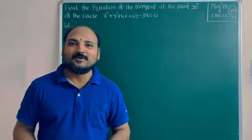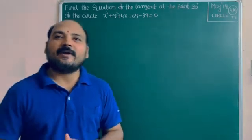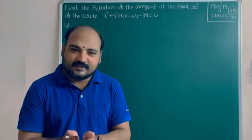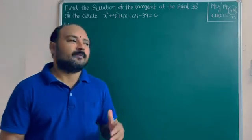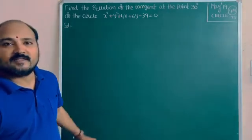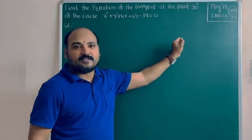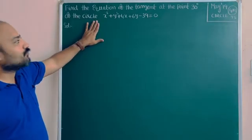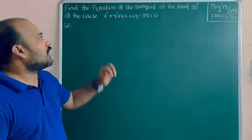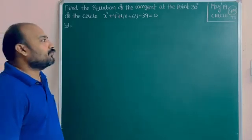Hi dear students, welcome to our channel Maths with Panitra. In this video we are going to discuss Mathematics 2B, Circles chapter four mass questions. In the playlist, one question per video for the convenience of students. The first question: find the equation of the tangent at the point 30 degrees of the circle x² + y² + 4x + 6y - 39 = 0. They are asking to calculate the tangent equation at the parametric point theta.